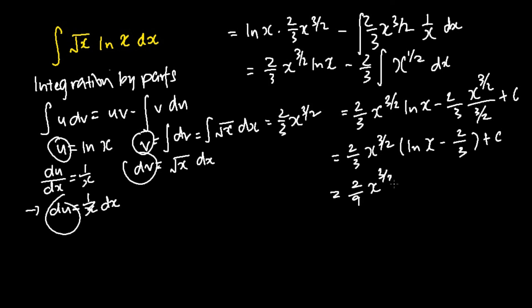And hence the final answer is as follows: 2 over 9 x to the power 3 over 2, bracket 3 ln x minus 2 plus c.